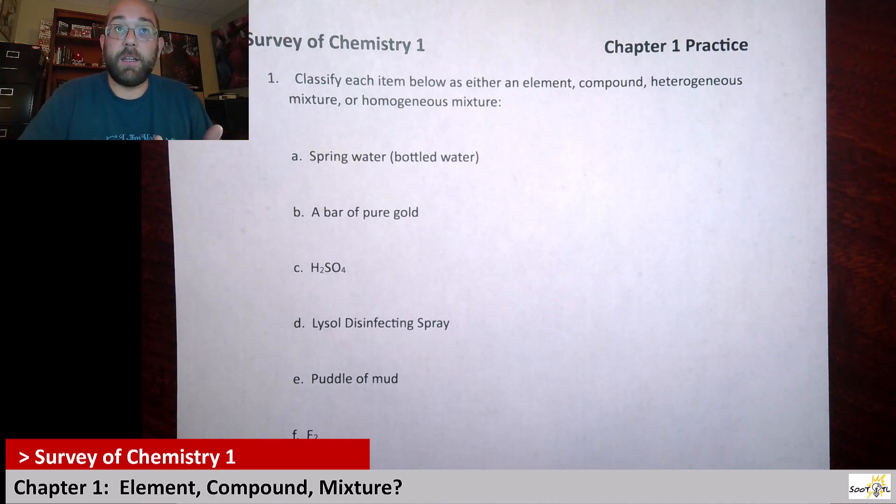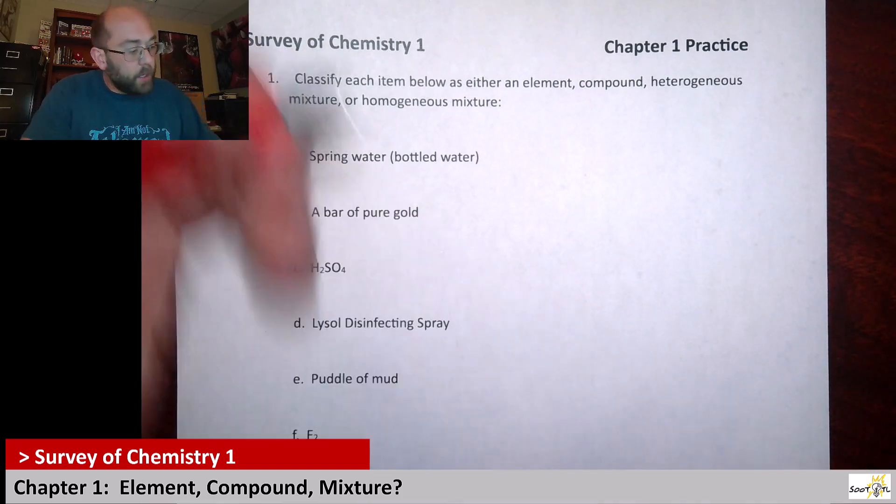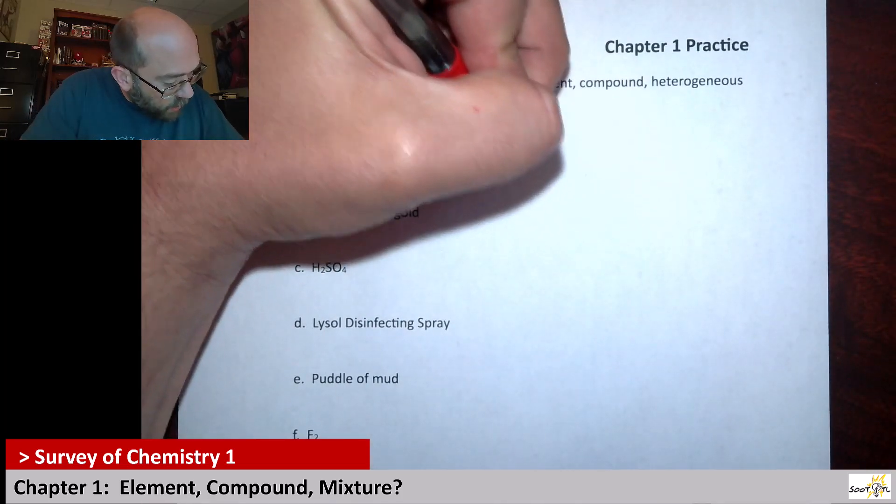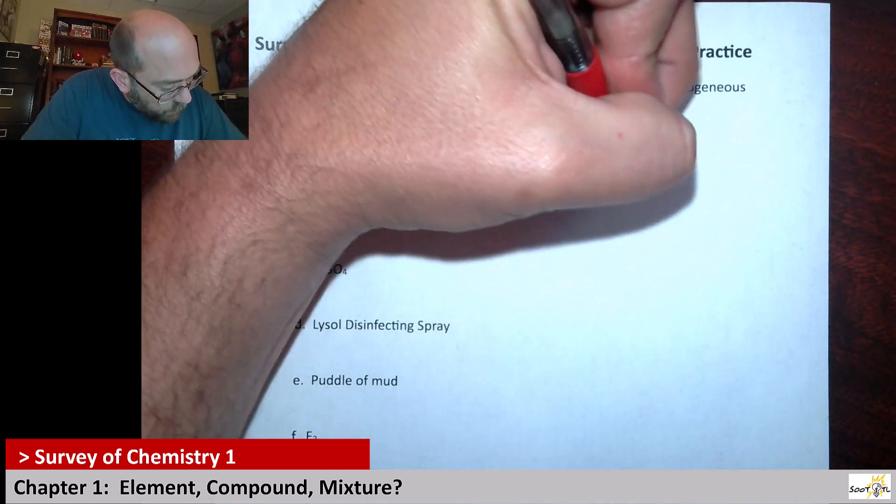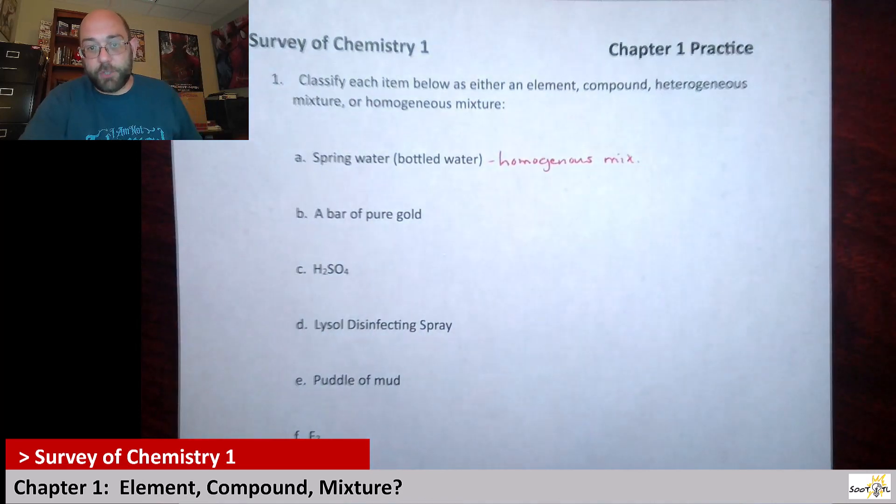There's usually sodium chloride in there or whatever other electrolyte. So this is a mixture and I'm assuming that you're going to look at that bottle of water. If you see stuff floating in it or moving around in there, you're not going to drink that bottled water. So you're going to want something that looks crystal clear, uniform throughout. So we would consider this a homogeneous mixture.